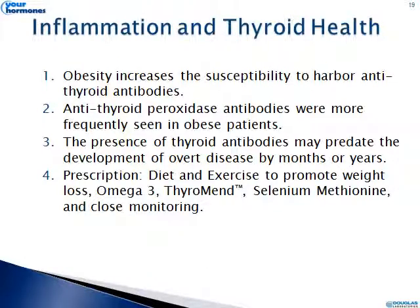What we're talking about is the relationship between inflammation and thyroid health. The literature tells us that obesity increases susceptibility to elevated anti-thyroid antibodies — we're going to see more anti-thyroperoxidase antibodies as patients become more obese. The presence of these antibodies may actually predate overt disease by months or years, so the patient is not showing low T3 or low T4, but we're seeing elevated thyroid antibodies and can recognize the subclinical hypothyroid state.